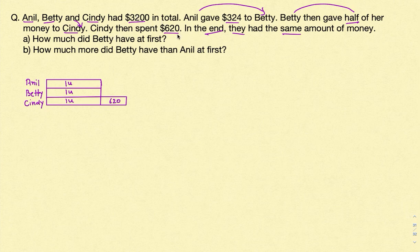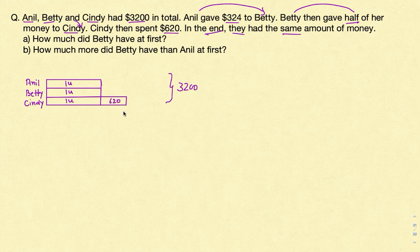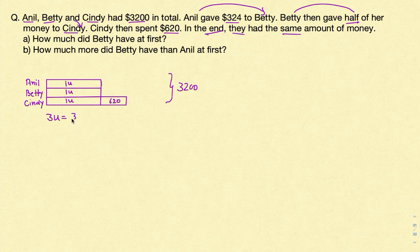It's only when Cindy spent the money that the total decreases. Since we've brought back the $620, the total should now be $3,200. This $3,200 equals three units plus another $620. So three units equals $3,200 minus $620, which gives us $2,580.